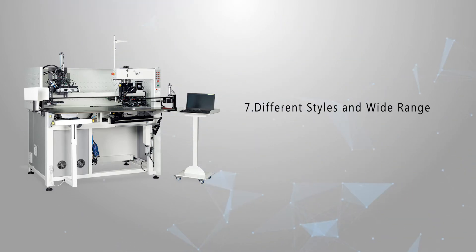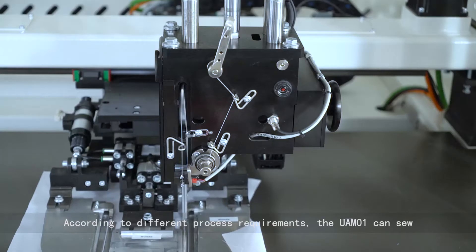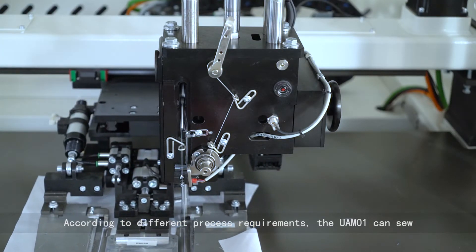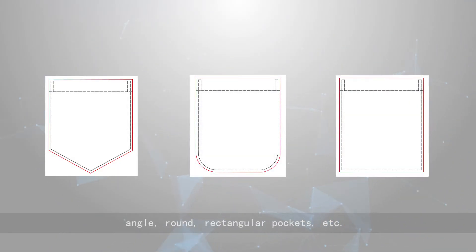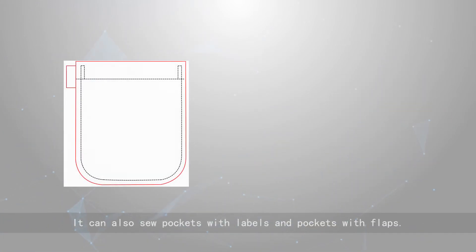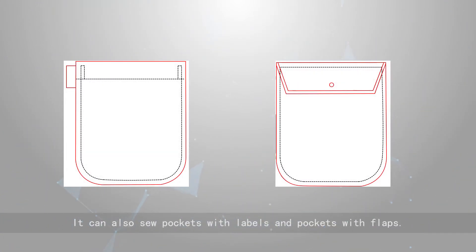Different styles and wide range. According to different process requirements, the UAM01 can sew angled, round, rectangular pockets, etc. It can also sew pockets with labels and pockets with flaps.